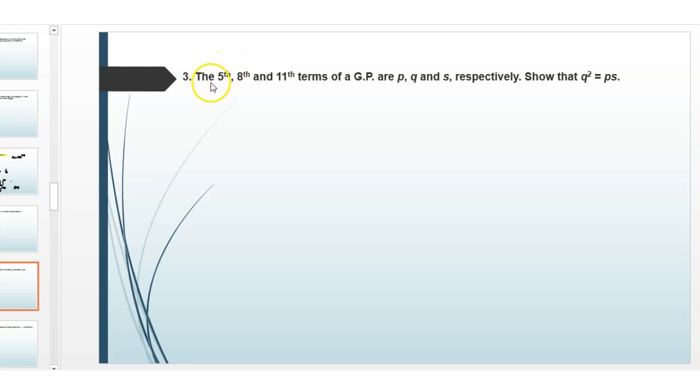Hello to everyone. Welcome back to my channel. In this question, the 5th, 8th and 11th term of a GP are P, Q and S respectively. Show that Q square equals P multiplied with S.